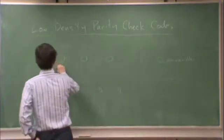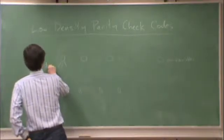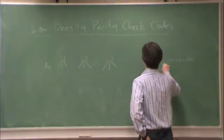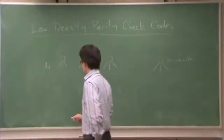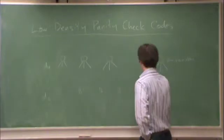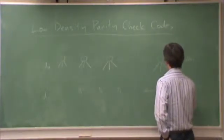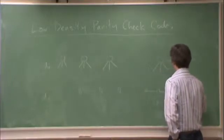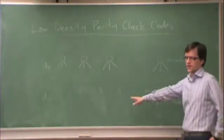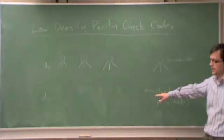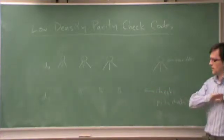We have this bipartite structure. Just to remind you, each variable has a variable degree dv. So this is a regular LDPC code. And each check - I call these checks - these represent parity checks, the constraints that appear in every row of the parity check matrix.